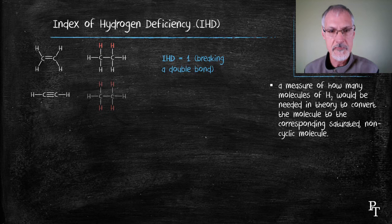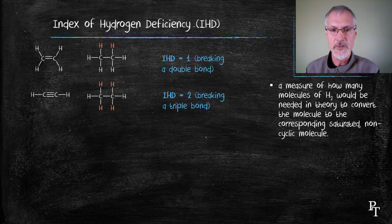If I start with ethyne, a triply bonded substance, to turn it into ethane in the saturated form, I require four hydrogens or two hydrogen molecules, hence its IHD would be two.